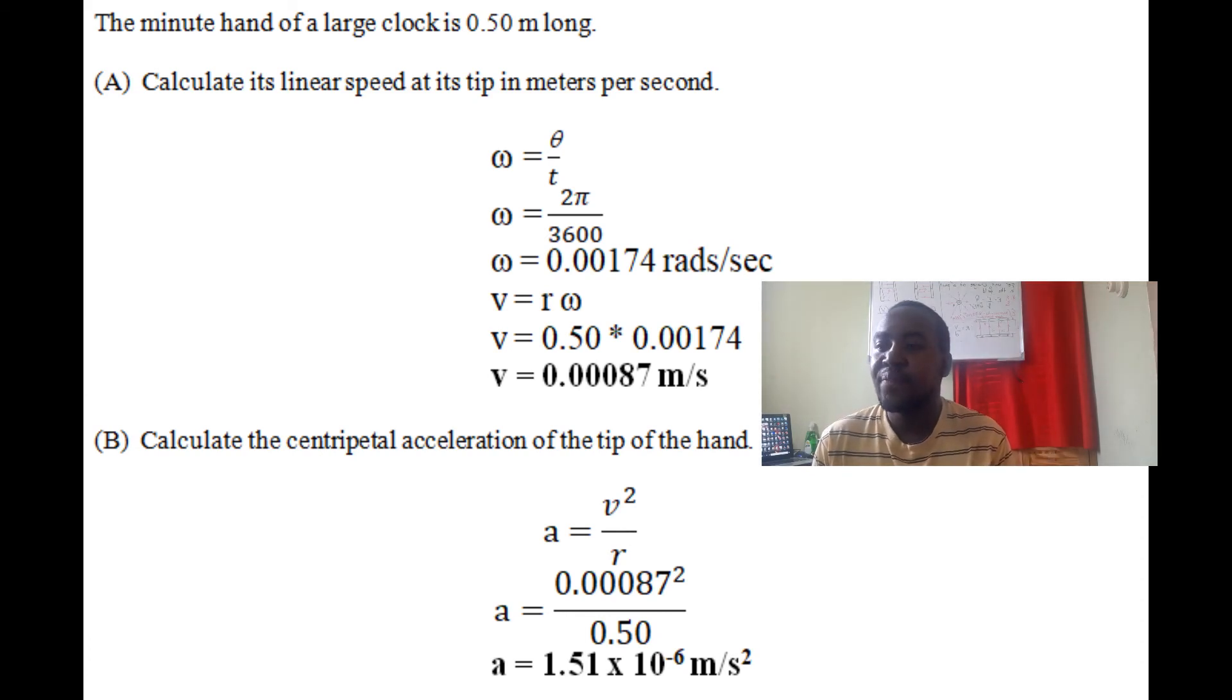When we divide, we get ω = 0.00174 rad/s. We know that linear velocity v = r × ω. The radius of this clock hand is 0.50 multiplied by ω, which is 0.00174, and we get the linear speed to be 0.00087 m/s.